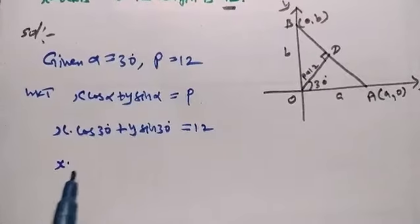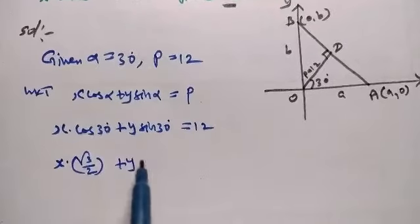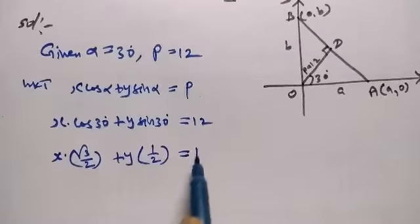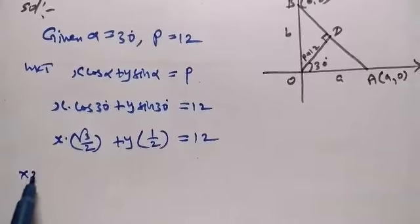Now, cos 30° = √3/2 and sin 30° = 1/2, so we have X(√3/2) + Y(1/2) = 12.